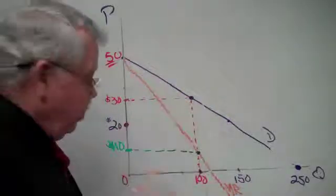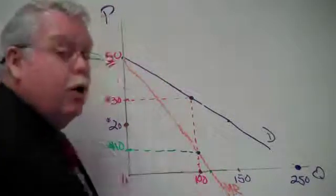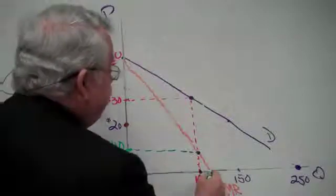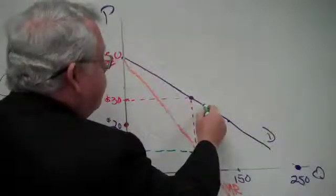Remember, quick review. When marginal revenue goes to zero, before it goes into negative numbers, it's associated with the midpoint of the demand curve. And the upper half of the demand curve is the elastic range, and that's where we want to operate.